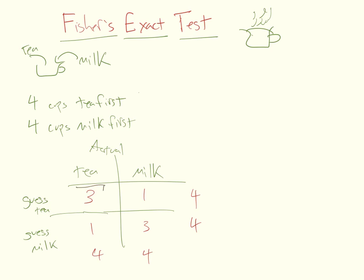And so here's the smart thing that he did is he figured out the distribution of this number right here, so the number of times where she guessed tea first, and it was actually tea first. That number is actually under the null that she was just guessing randomly, that number is actually a draw from a hypergeometric distribution.